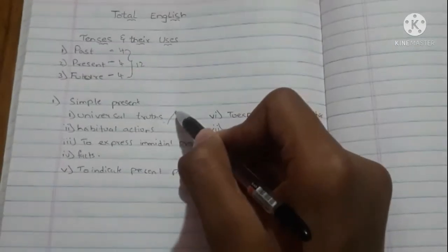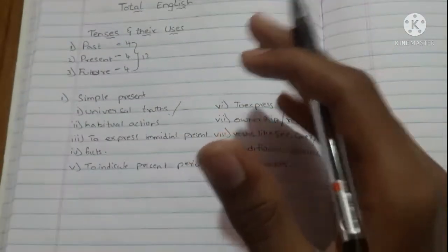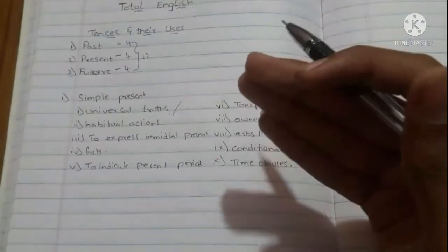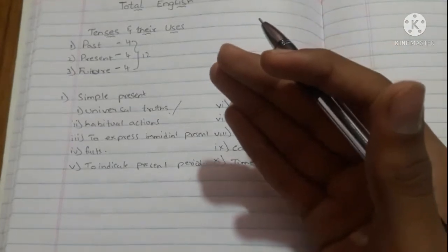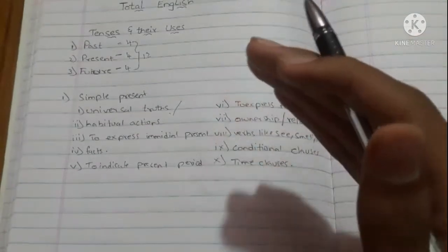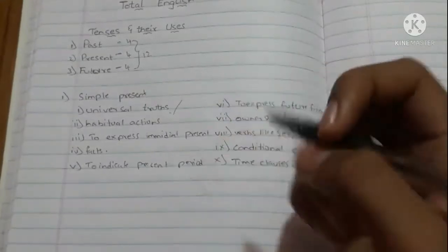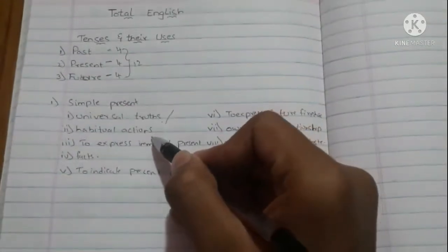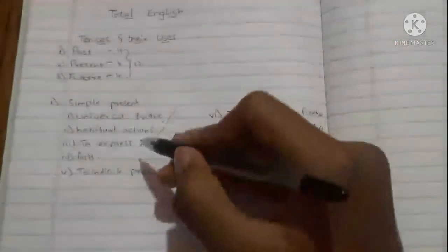Now moving to habitual actions. Habitual actions also come under simple present. Habitual actions are things which happen repeatedly — also known as repeated actions. For example: I wake up early in the morning, I brush every day, he visits his family every weekend, he goes to bed at 11 o'clock every night. These types of habitual or repeated actions come under simple present.